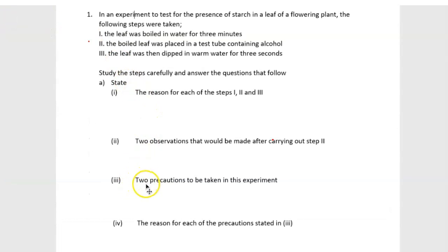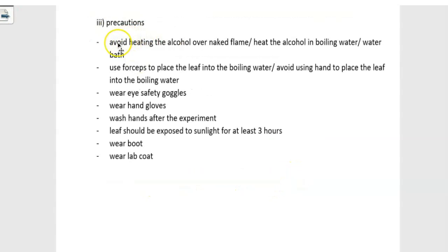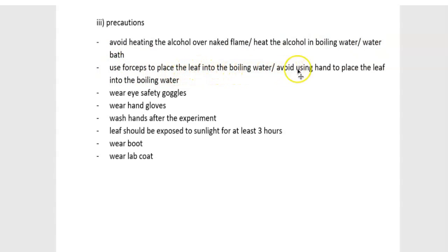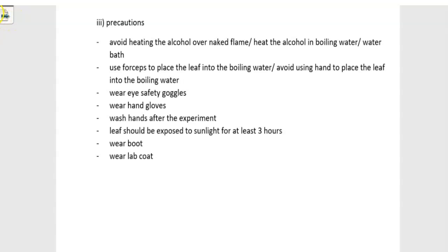Two precautions to be taken in this experiment: one, avoid heating the alcohol over a naked flame, because the alcohol is flammable — instead heat it in a water bath. Two, use forceps to place the leaf into the boiling water; avoid using your hand. Also, wear eye safety goggles, wear hand gloves, wash hands after the experiment, ensure the leaf is exposed to sunlight for at least three hours before the experiment, and wear a safety boot and a lab coat.